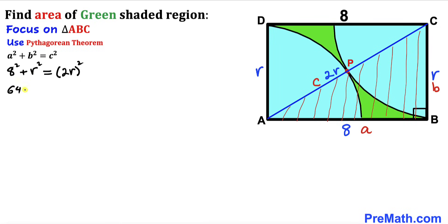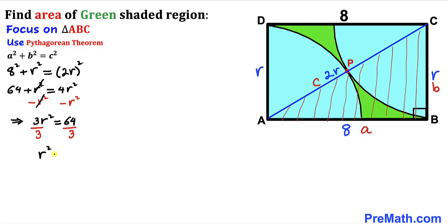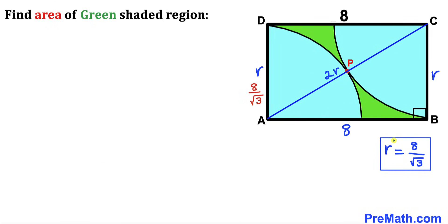This gives us 64 + r² = 4r². Subtracting r² from both sides we get 3r² = 64, so r² = 64/3. Taking the square root of both sides, radius r equals 8 divided by √3. So the radius of this quarter circle is 8/√3.